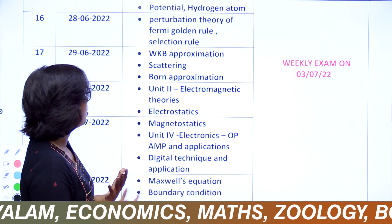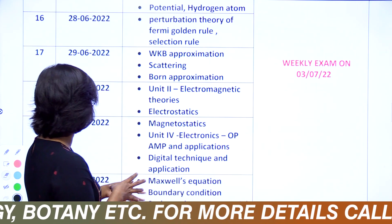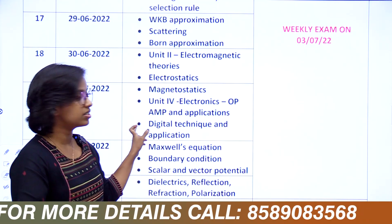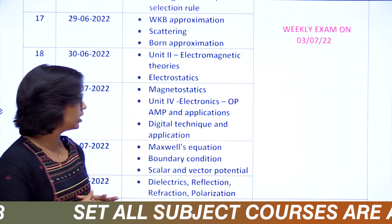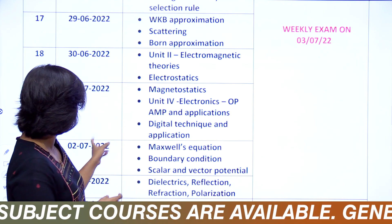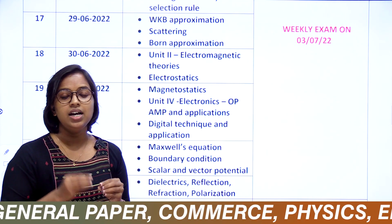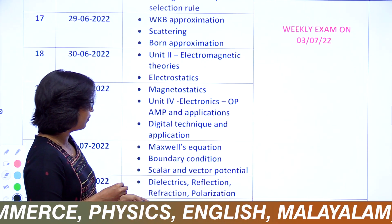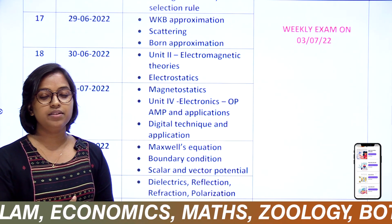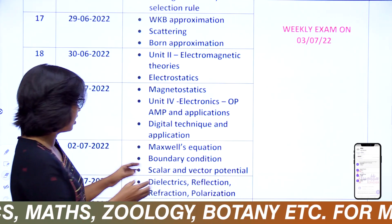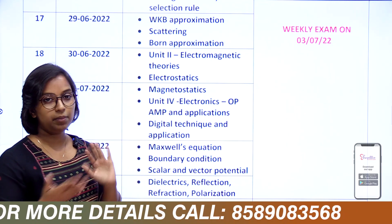On the 30th is Electromagnetic Theory - electrostatics basics. On July 1st, Magnetostatics and Electronics Op-Amp and Application, then Digital Technique. Then 2nd July, Maxwell's Equation, Boundary Condition, Scalar and Vector Potential. On the 3rd day, Dielectrics, Reflection, Refraction and Polarization - optics related portions. At the end of the day, weekly examination on 3rd July.